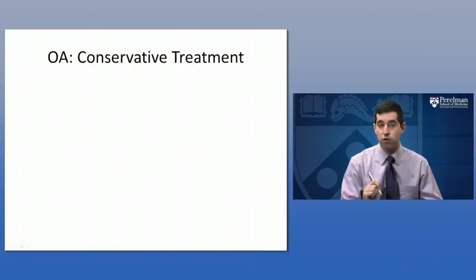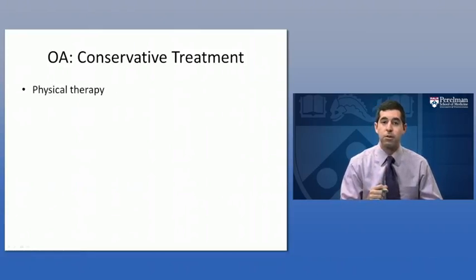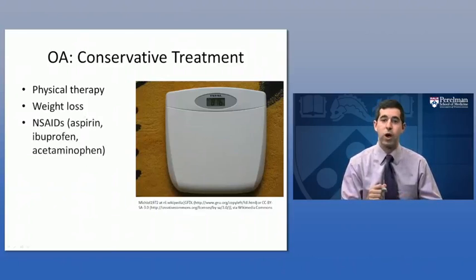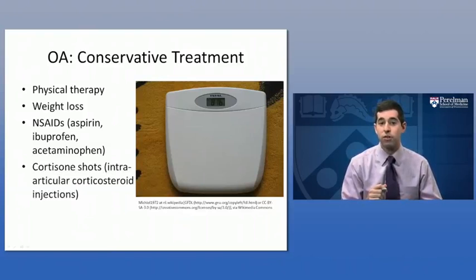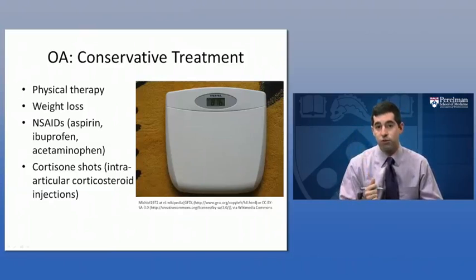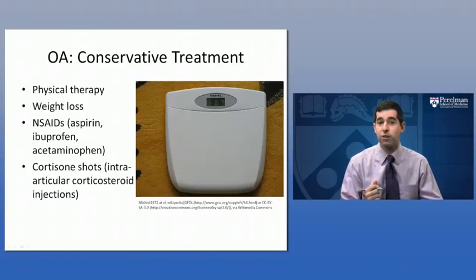For treatment of osteoarthritis, generally we start with conservative treatment. This usually involves physical therapy, particularly if there's damage in weight-bearing joints. Weight loss is of course a mainstay because it helps reduce the stress on joints impacted by osteoarthritis. NSAIDs or non-steroidal anti-inflammatory drugs may also help with pain, including aspirin, ibuprofen, and acetaminophen. We may also use cortisone shots — injections of corticosteroids directly into the joint. Because the medication stays localized within the joint rather than entering the bloodstream, there's not as much risk of infection, and intra-articular cortisone injections can provide very significant improvement in pain through reduction of inflammation.